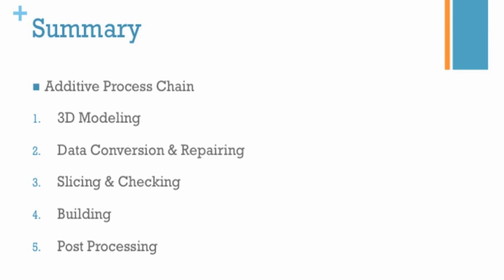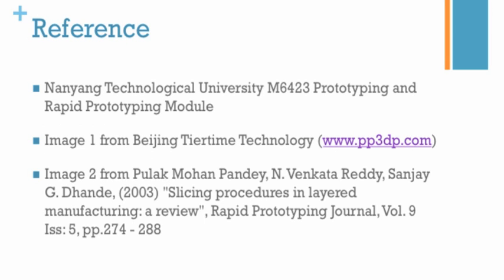To summarize, the additive process chain has five steps: 3D modeling, data conversion and repairing, slicing and checking, building, and post-processing. It's important to have a good understanding of the process chain for whichever 3D printer you use, as each manufacturer may require slightly different steps. However, the general steps fall within these five.